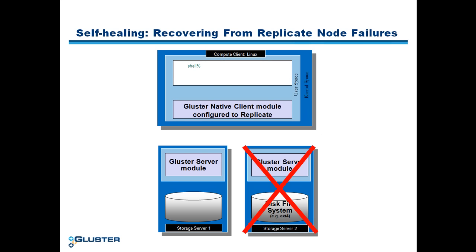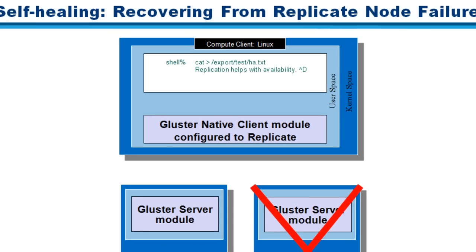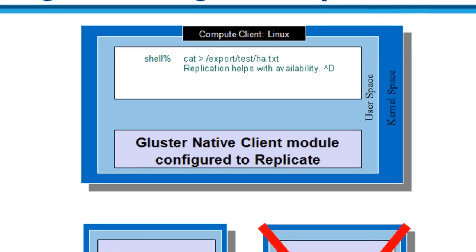Let's assume storage server 2 goes down. While it is down, we create a new file ha.txt in the export/test directory where the replicate volume has been mounted.